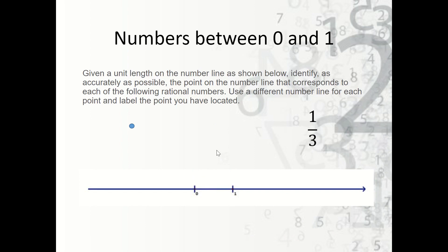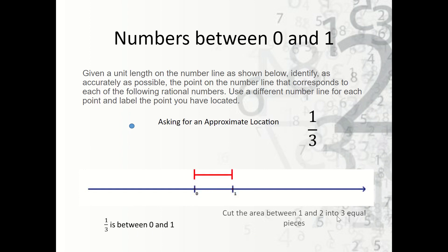Now what about one third? Same thing — we're looking for the approximate location. We should note that one third is between zero and one. We're going to start with zero and one and then break this into three equal pieces because the denominator is three. There are my three equal pieces — they may not be exactly equal but close. We drag our point to that location. This is one third.